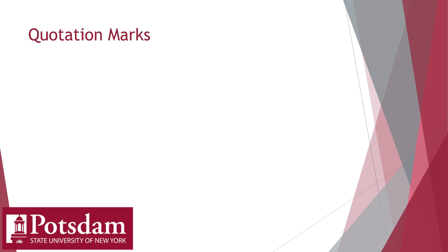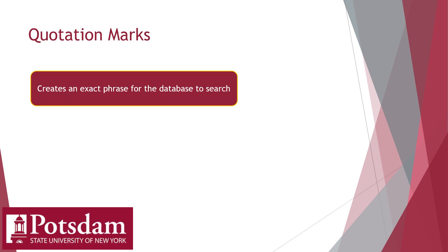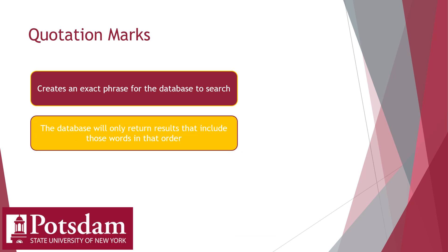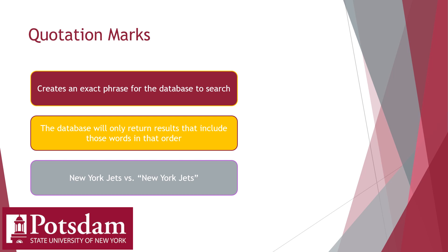You're probably already familiar with the first of these from a lifetime of Googling: using quotation marks. Placing words in quotation marks creates an exact phrase, so the database or search engine will only give you results that include those exact words in that exact order. For example, if you search New York Jets, most of your results will be for the football team, but it's possible you'll get an article about York, Pennsylvania opening a new airport where jets land — New York and Jets are all in there. But put it in quotes and you'll just get returns about the New York Jets.